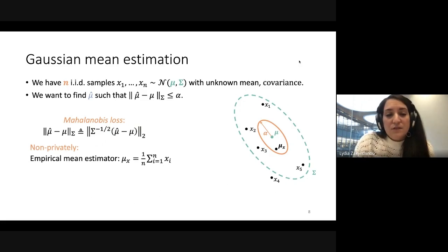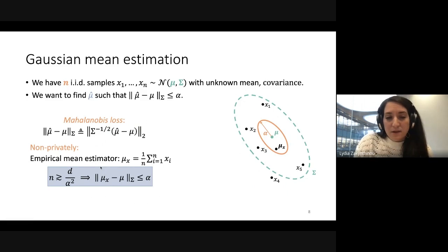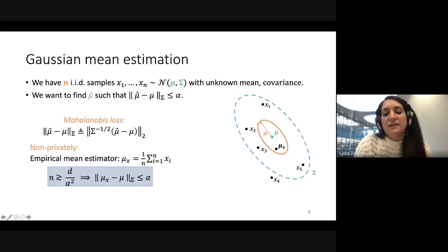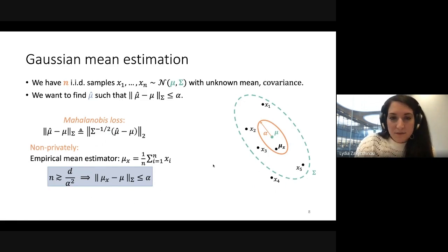Without privacy, the natural thing to do is take your data, average them, and take the empirical mean. The guarantee is good: if the number of samples is at least d over alpha squared, where alpha is the target accuracy, then the distance from the true mean is at most alpha. But what we want to do is solve this problem with differential privacy.